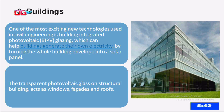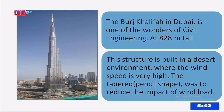The Burj Khalifa, the tallest building in the world today, is a masterpiece of civil engineering. It is about 828 meters tall — just about 130 meters short of one kilometer. It is built in a desert environment where wind speed is very high. That type of wind loading, called sway load, can bring a building down. Many tests were done before the building was sited there. The tapered, pencil shape of the Burj Khalifa was specifically designed to reduce the impact of the wind.